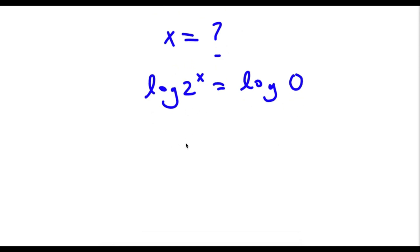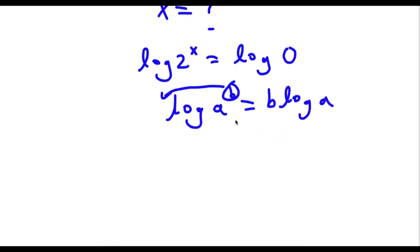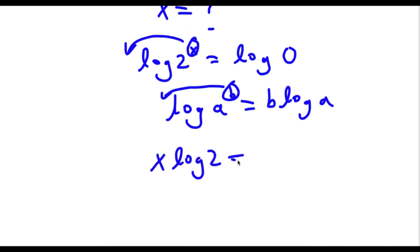Now, if I have something in the form log a to the power of b, I can actually move this exponent b to the front of the logarithm. So this would equal b times log a. So in this case, I have log 2 to the power of x and I can move this exponent x to the front. So this would equal x times log 2 is equal to log 0.